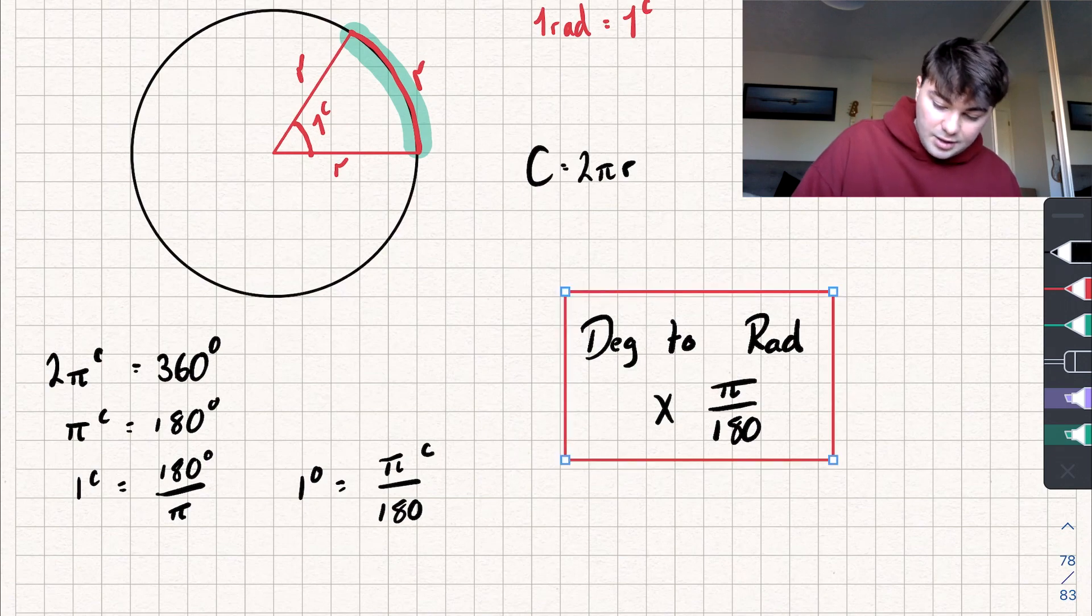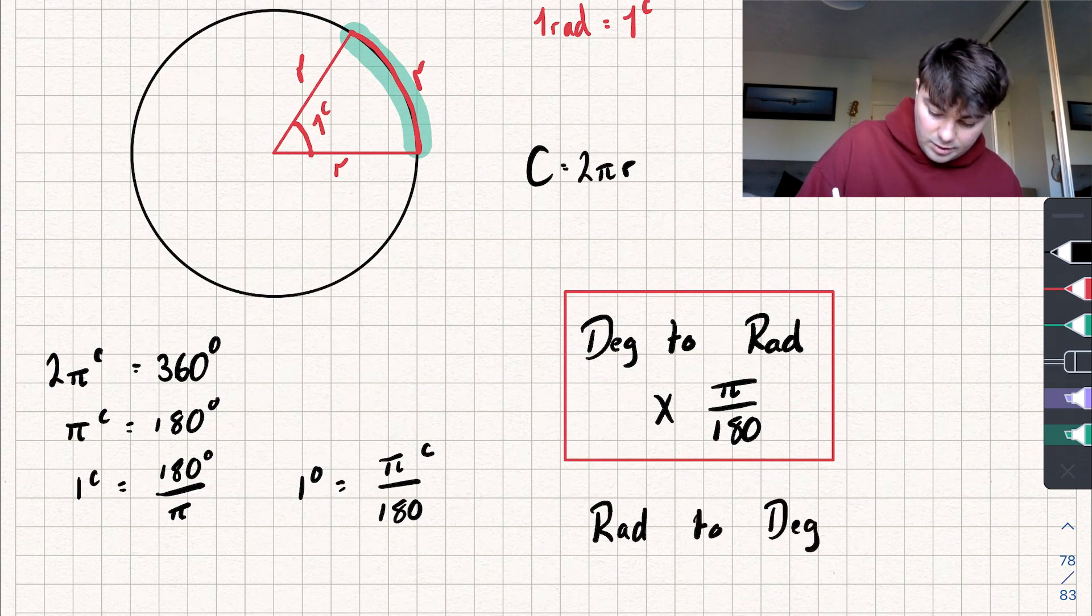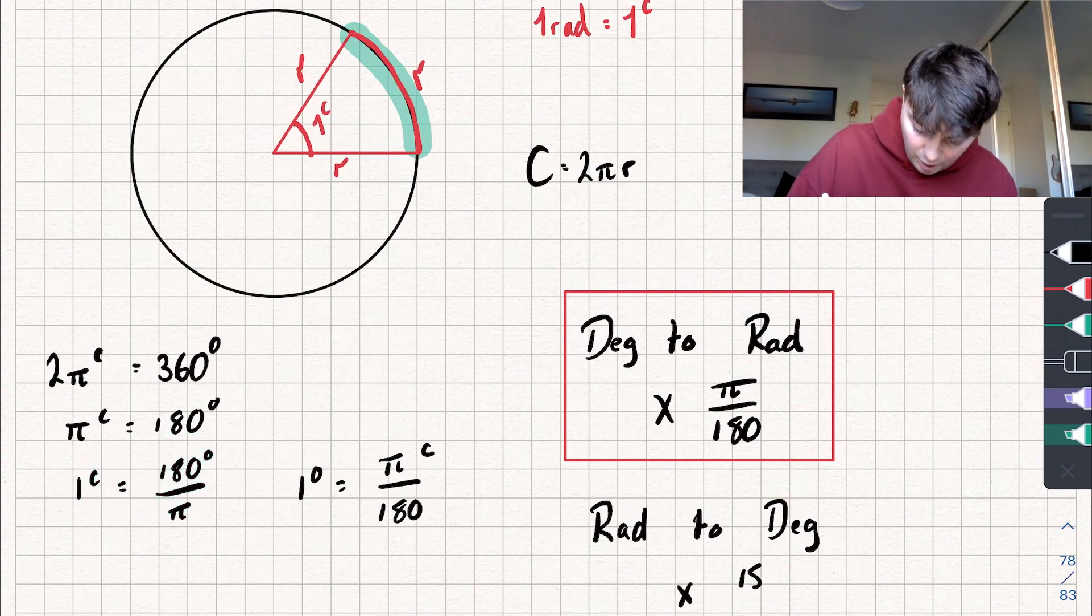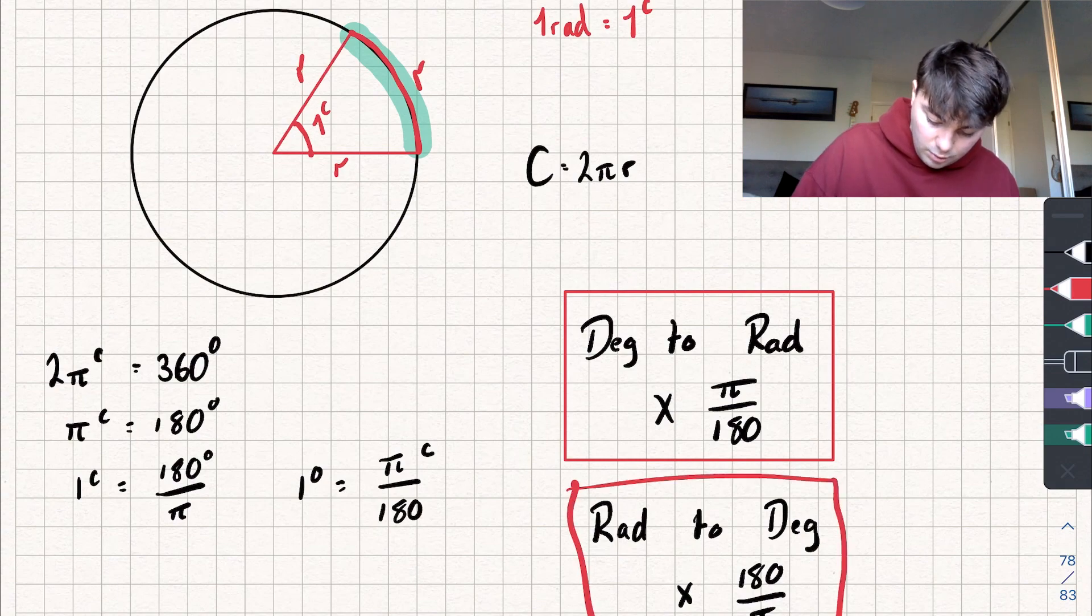Now if we want to go from radians to degrees, we want to go the other way, so radians to degrees, we're going to use the other equality and we're just going to multiply by 180 over π. So multiply by 180 divided by π.